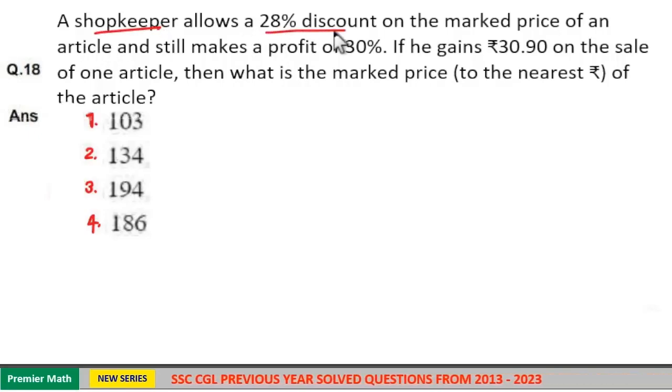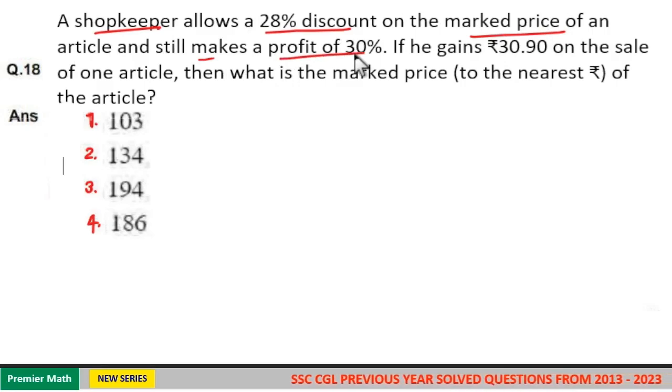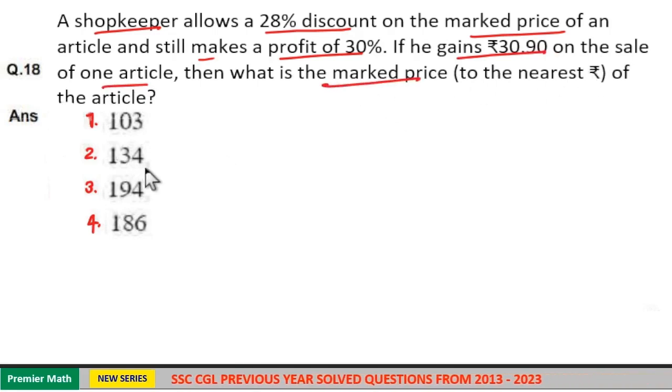A shopkeeper allows 28% discount on the marked price of an article and still makes a profit of 30%. If he gains ₹30.90 on the sale of one article, then what is the marked price of the article?